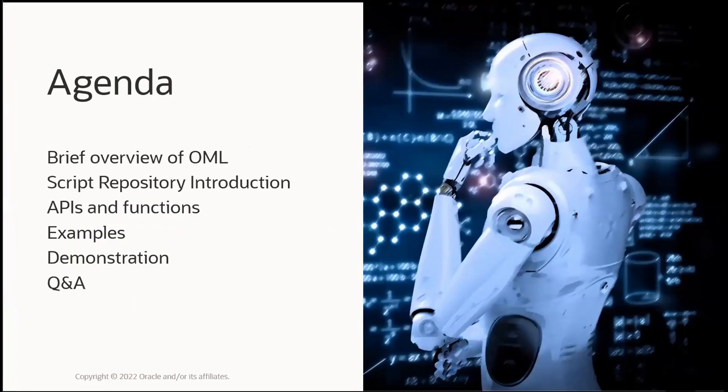Let's start with a quick agenda. First, we'll briefly review Oracle Machine Learning for R and Python and explain the script repository capabilities. Then we'll go into examples and cover the APIs and functions. And lastly, we'll open the Notebooks environment, demonstrate a few examples, and finish with Q&A.